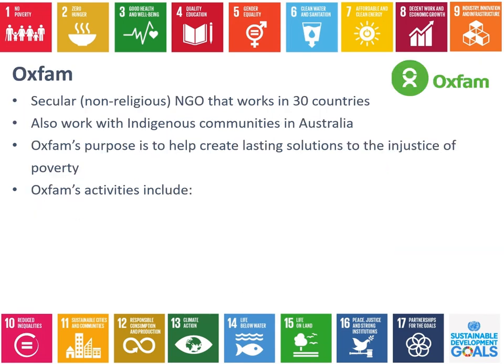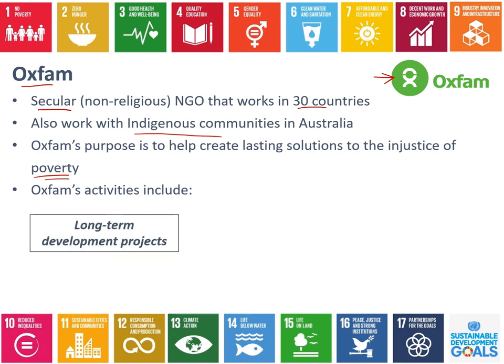The last organisation we're going to look at is Oxfam. You've probably seen this logo on billboards, the back of buses, or in magazines — it's a big organisation within Australia. Oxfam are secular, meaning they are non-religious and have no religious ties, and they work in 30 different countries. Oxfam also works with Indigenous communities in Australia, as does the Australian Red Cross, remembering that some communities in Australia have health outcomes as low as very low-income countries. Oxfam's purpose is really around poverty — their big focus is to try and reduce poverty and the injustice of poverty.